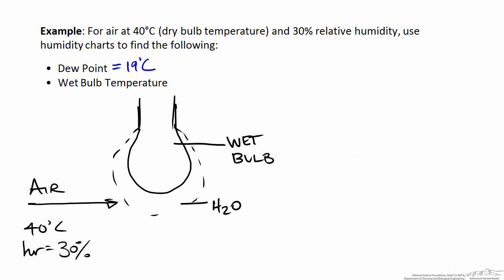Now that we know the dew point, we want to find the wet bulb temperature. It is helpful to look at how this can be measured to understand the concept. A wet bulb differs from a dry bulb in that it is surrounded by a wick saturated with water. If we blow air at 40 degrees and 30% relative humidity past that wet bulb, it is going to cause some of the water to evaporate. As water evaporates, heat is lost from the wet bulb — heat is transferred from the wet bulb to the water as it evaporates — and that has the effect of cooling the wet bulb.